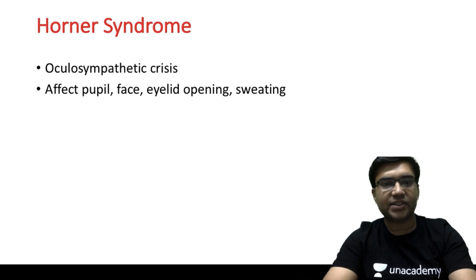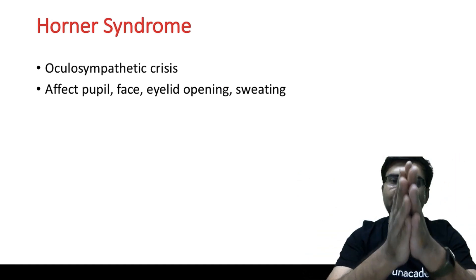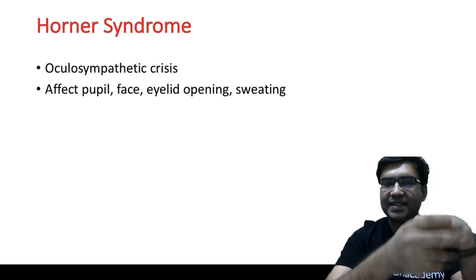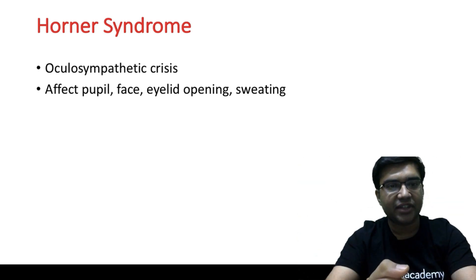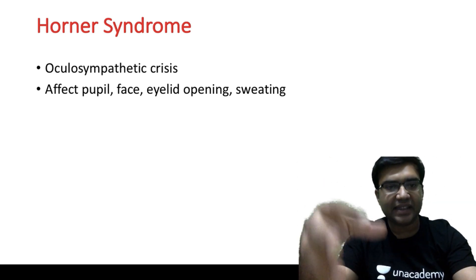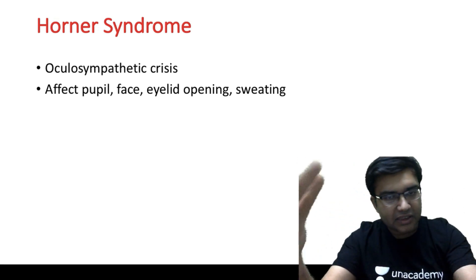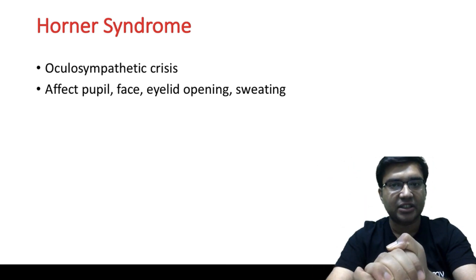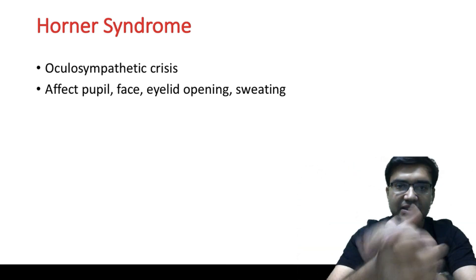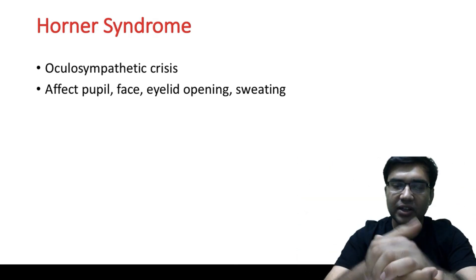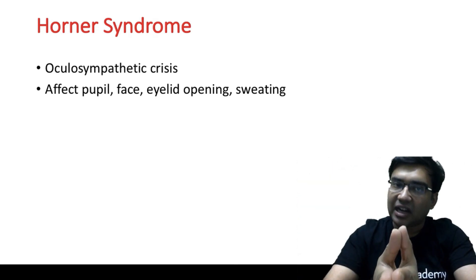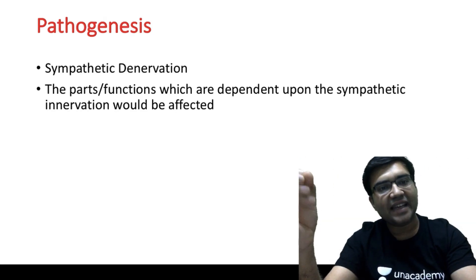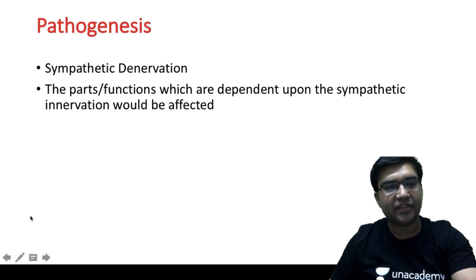So what is actually Horner syndrome? Horner syndrome is an oculosympathetic paresis. Because of the sympathetic denervation, you can get some signs and clinical features where the portions of the body that have sympathetic innervation — like your pupil, your face, your eyelid opening, or your sweating — are affected. This is basically called Horner syndrome, where the pathogenesis lies in sympathetic denervation.